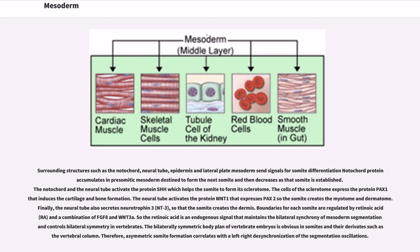Finally, the neural tube also secretes neurotrophin-3, so that the somite creates the dermis. Boundaries for each somite are regulated by retinoic acid in combination of FGF8 and NICD. The retinoic acid is an endogenous signal that maintains the bilateral synchrony of mesoderm segmentation and controls bilateral symmetry in vertebrates. The bilaterally symmetric body plan of vertebrate embryos is obvious in somites and their derivatives such as vertebral column. Therefore, asymmetric somite formation correlates with the left-right desynchronization of the segmentation oscillations.